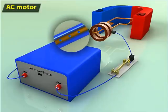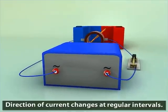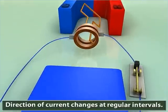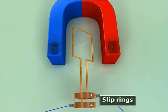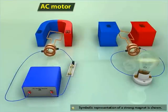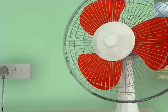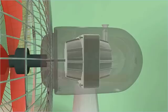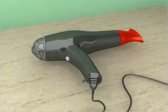As the key is closed, an alternating current starts flowing through the armature. Even though the direction of current changes at regular intervals, the armature rotates in one particular direction because of the slip rings. You can notice that the action of an AC motor is basically the reverse of that of an AC generator. Besides electric fans, electric motors are used in devices such as vacuum cleaners, water pumps, and hair dryers.